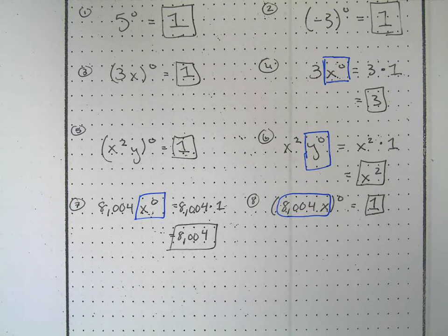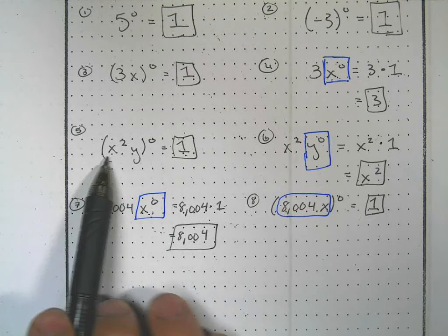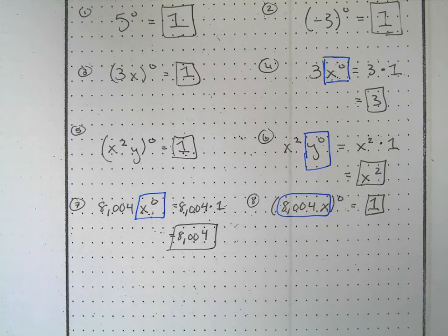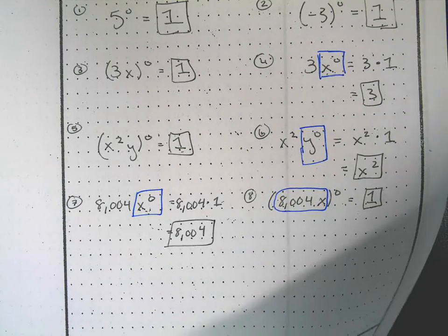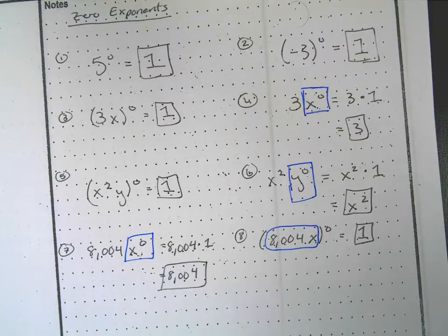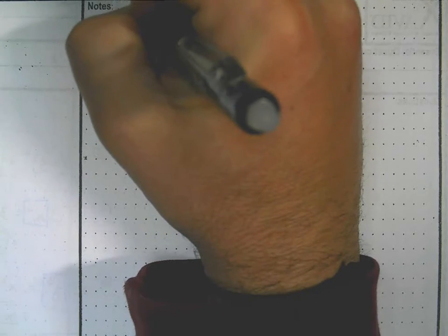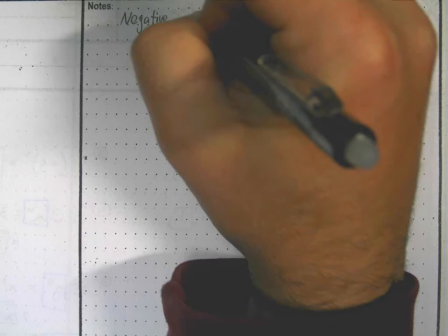The zero power is pretty straightforward — everything equals one — but we have to be careful about where our parentheses are located. The parentheses tell us exactly who is being raised to the zero power. Now we're going to switch gears to negative exponents, which is page two.